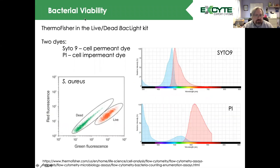Here is an example using the Thermo Fisher Live/Dead Backlight Kit. This uses two dyes: a cell-permeant nuclear dye, CYTO9, and a cell-impermeant dye, propidium iodide. When we plot PI versus CYTO9 fluorescence — using Staph aureus — we can identify the live cells from the dead cells.